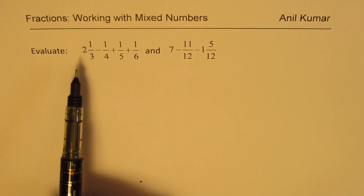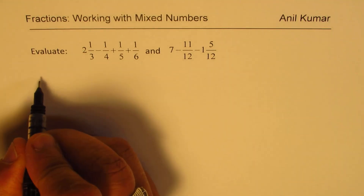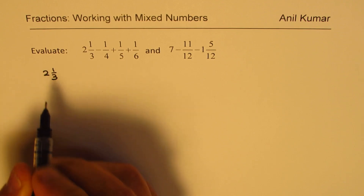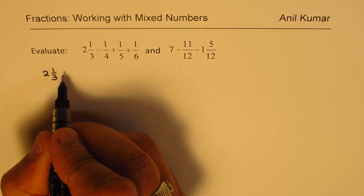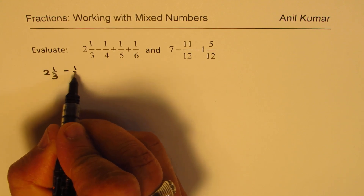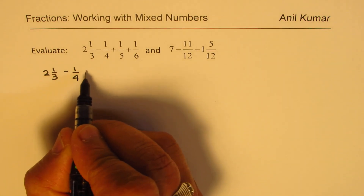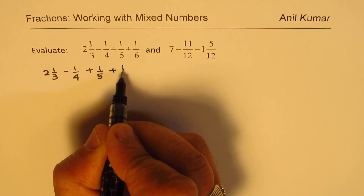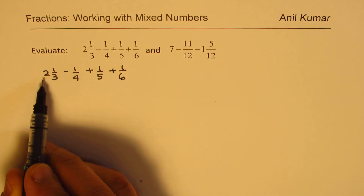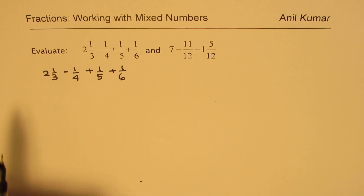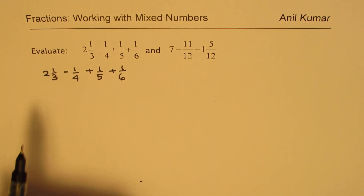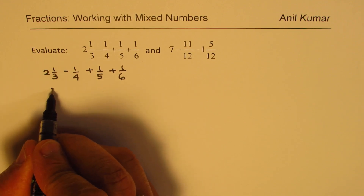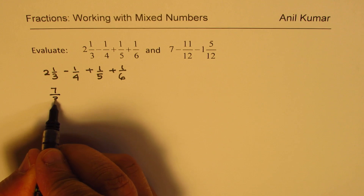Let's do the first one: 2⅓ is a mixed number. We could rewrite this as 2 times 3 plus 1. The other numbers here are ¼, ⅕, and ⅙. The first step is to write the mixed number as an improper fraction — 2 times 3 is 6, plus 1 is 7, so 2⅓ is written as 7/3.